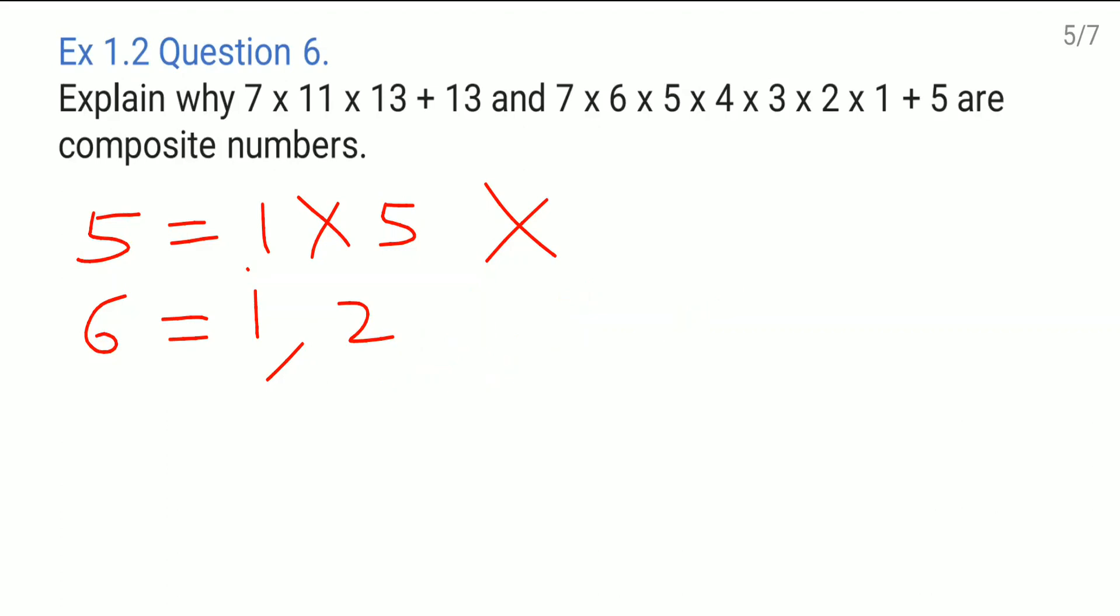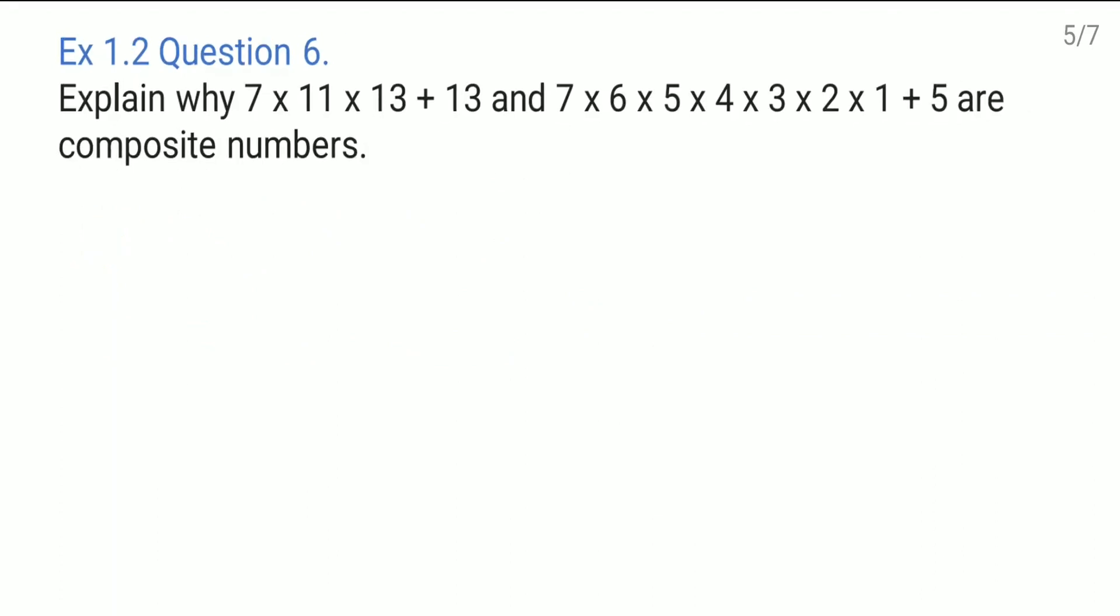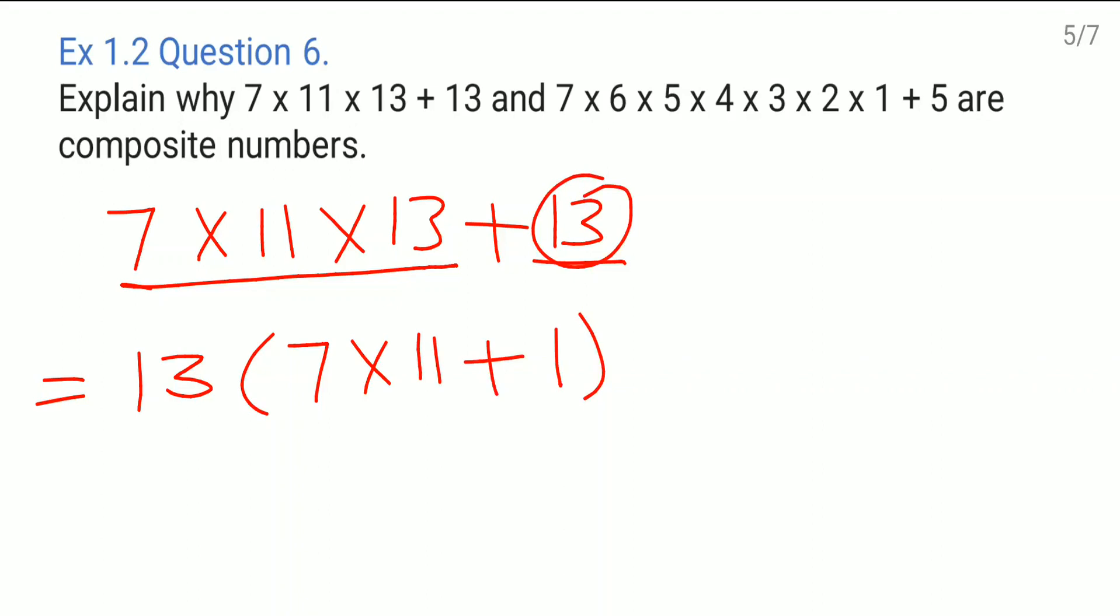So now same way we will try to see whether the given expressions are composite numbers or not. See here 7 into 11 into 13 plus 13. Consider this as the first term, this as the second term. So I can take 13 common. So what is left here? 7 into 11 plus 1, because 13 I have taken common. So what is left there? 1. So here 13, this is 77 plus 1, which is equal to 13 into 78.